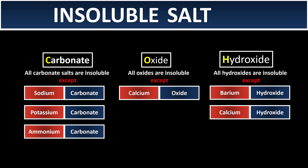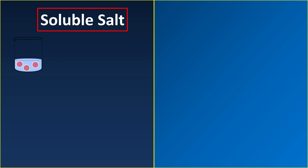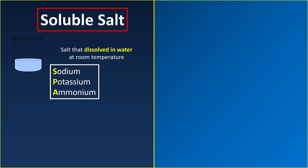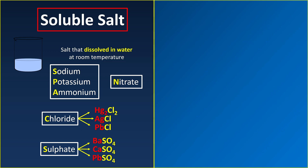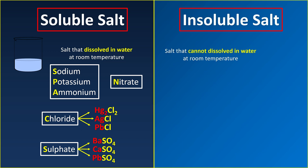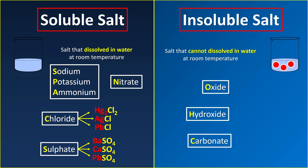Let's have a recap. Soluble salt is a salt that can dissolve at room temperature. The rules are: if we see sodium, potassium, or ammonium in front, or nitrate at the back, they are soluble no matter what. For chloride, all are soluble except Hg, Ag, and Pb — 'children have another party.' For sulfate, all are soluble except Ba, Ca, Pb — 'all students can be professional' or 'children have another party.' For insoluble salt, examples include compounds containing oxide, hydroxide, and carbonate.